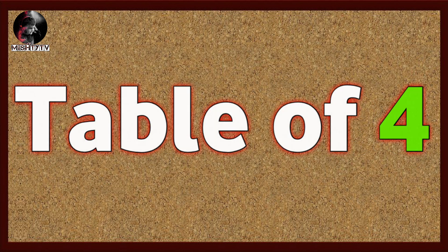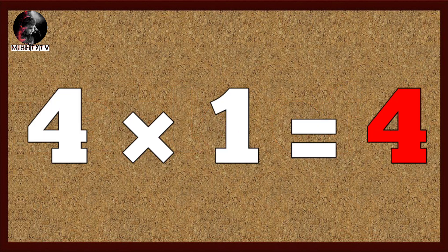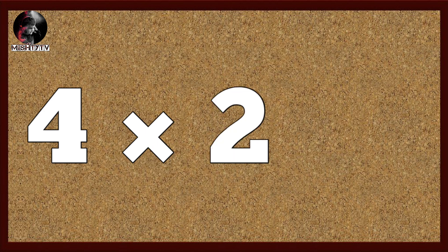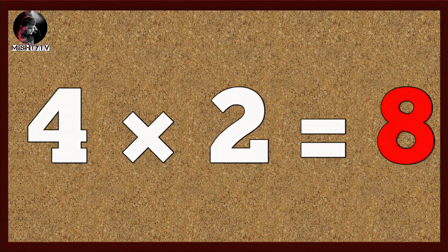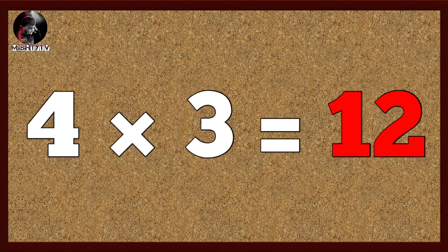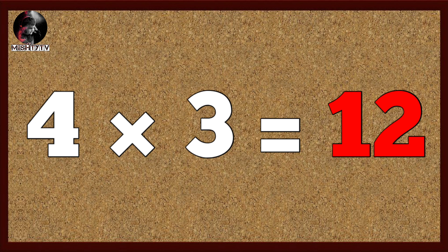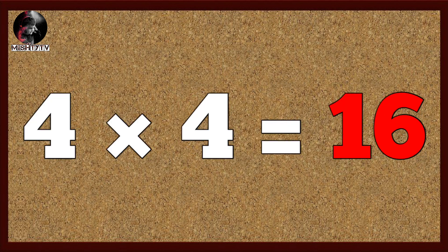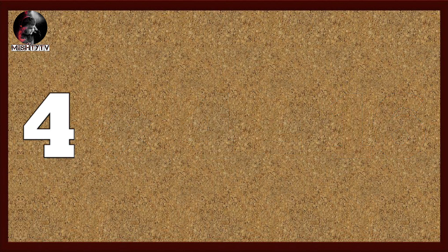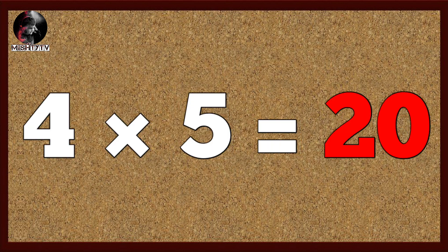Table of four. Four one's are four, four two's are eight, four three's are twelve, four four's are sixteen, four five's are twenty.